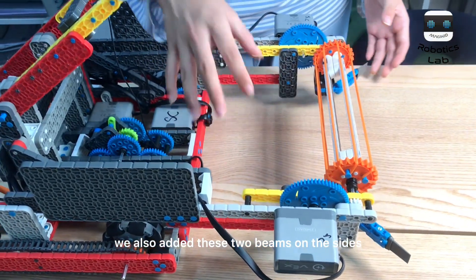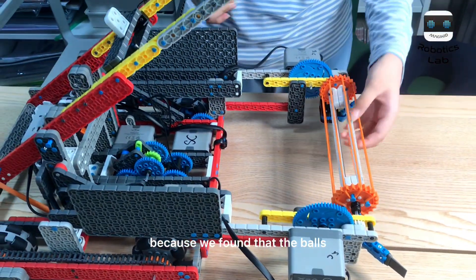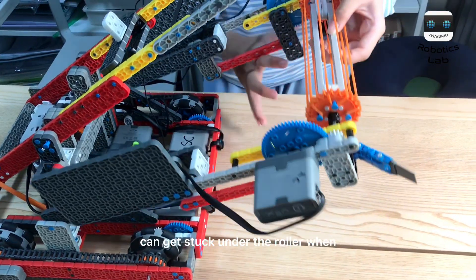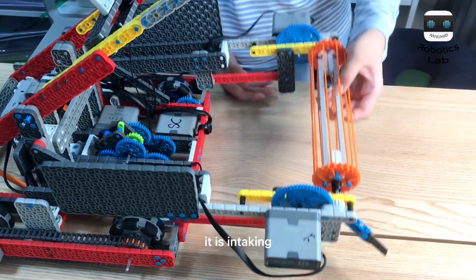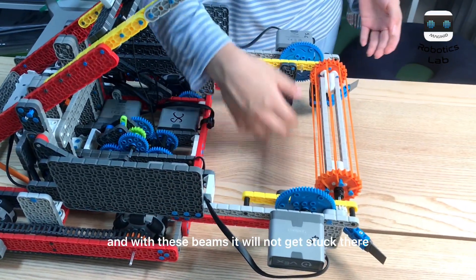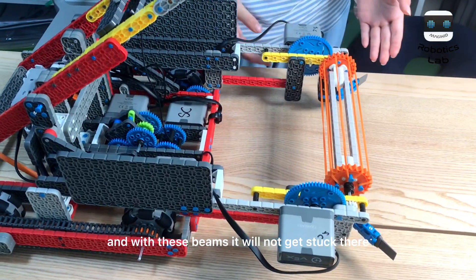We also added these two beams on the sides, because we found that the balls can get stuck under the roller when it is intaking, and with these beams, it will not get stuck there.